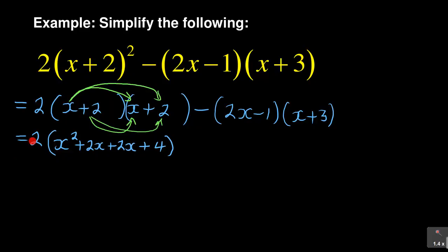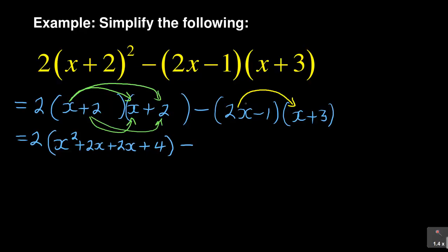Notice that this 2 is still multiplying everything inside, so just make sure you keep the 2. Do not multiply by 2 at this stage — you need to first open that bracket as done. Then you have minus, and you continue with the same method: 2x will multiply x, and 2x will multiply 3. The minus 1 will multiply x, and the minus 1 will multiply positive 3.